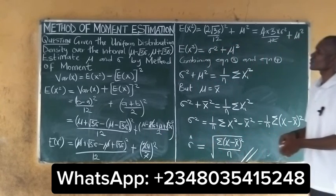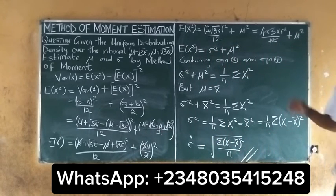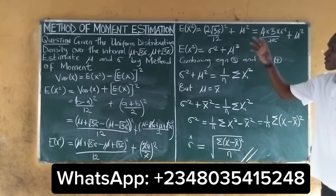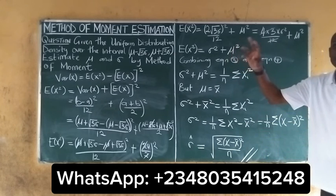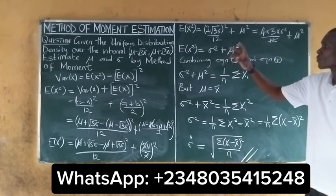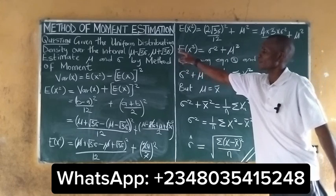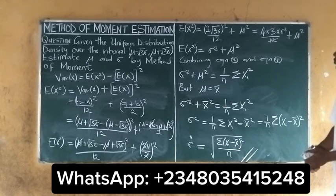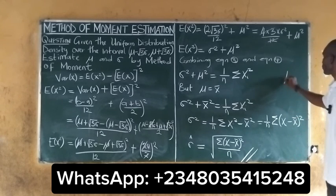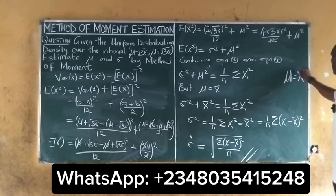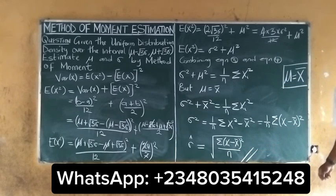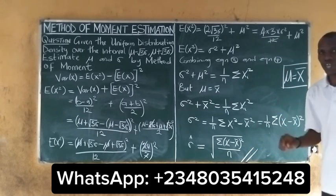So this is how we obtain the estimates for mu and sigma by the method of moments, given the uniform distribution over the interval mu minus square root of 3 sigma to mu plus square root of 3 sigma. We get mu-hat equals x-bar and sigma-hat equals the square root of (1/n)Σ(xi - x-bar)². For more on this topic, subscribe to this channel.